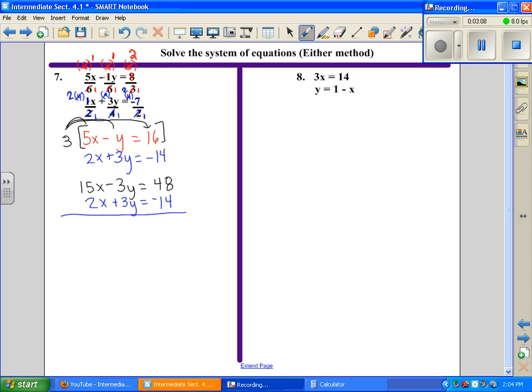Now I'm going to add down: 17x. These cancel just like we thought - if not, we made a mistake. Then we get 34. Divide both sides by 17, and x equals 2.